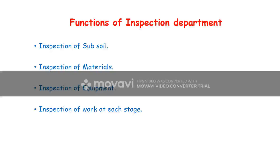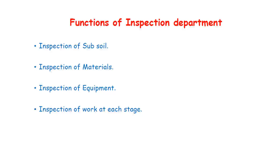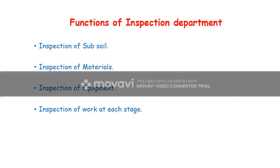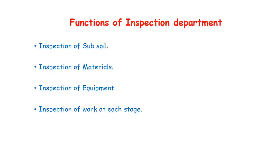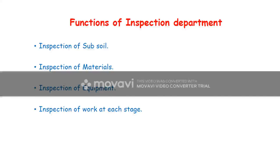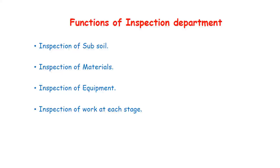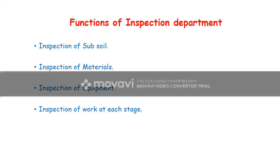Inspection of equipment: any equipment used for the construction of the project has to be properly inspected and maintained. Inspection of work at every stage: at certain intervals and at certain stages, continuous evaluation and inspection has to be carried out during construction — whether wall dimensions are maintained matching drawing sheets, room dimensions are correct, and what grade of concrete is being used for slab construction. These are the main functions of the inspection department.